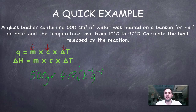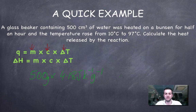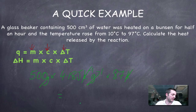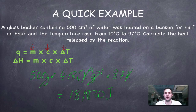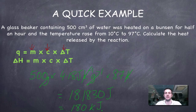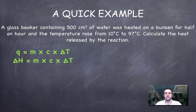By the way, 4.18 joules is also known as a calorie — the energy needed to raise 1 gram of water by 1 Kelvin. Completing the calculation: 500 × 4.18 × 87 gives 181,830 joules. Since we only have two significant figures, we convert to kilojoules and round: 180 kJ. That's how we use the formula to find an enthalpy change, because the heat released by the reaction equals the enthalpy change, assuming no energy is converted into other forms.